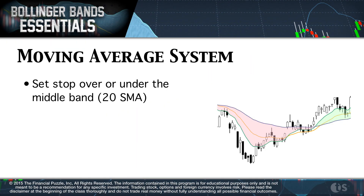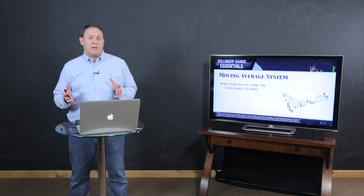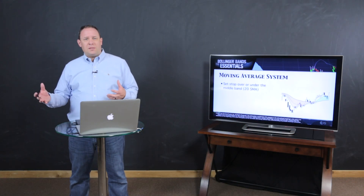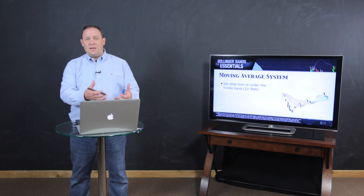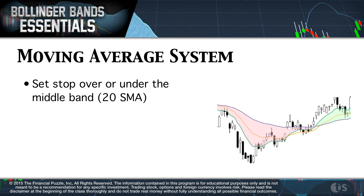The other system is the moving average system — the one I teach very heavily in the Foundations of Stocks and Options. Outside of the Bands trading system, it's a system I tend to gravitate towards myself. You basically use your moving average, give yourself a little buffer, and set your stop below or above the average. Within the band system, you set the stop either over or under the middle band — that's your 20-period moving average.